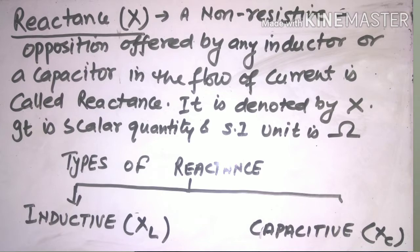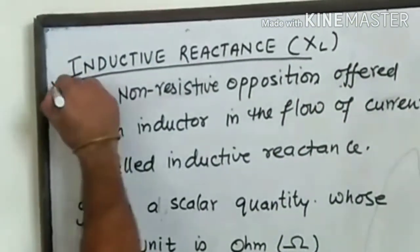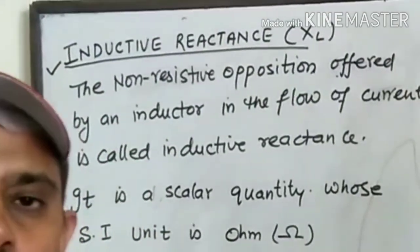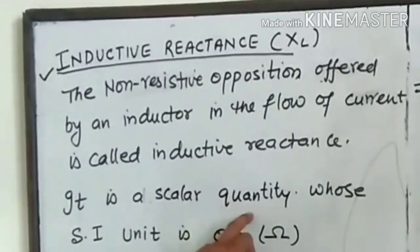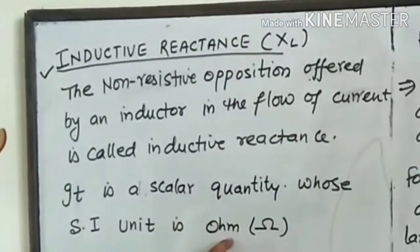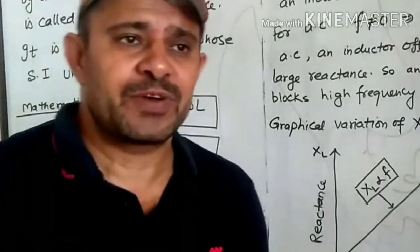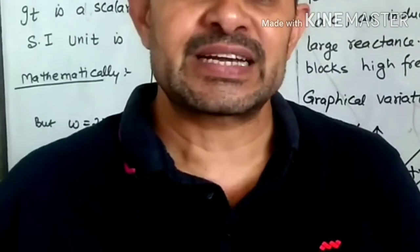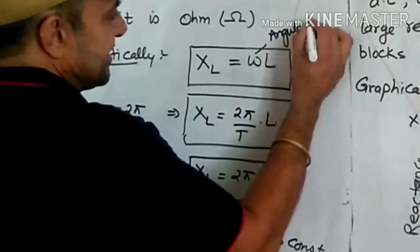Reactance is of two types. The first type is inductive reactance, denoted by X subscript L, and the second is capacitive reactance, denoted by X subscript C. Inductive reactance is the non-resistive opposition offered by an inductor in the flow of current. It is a scalar quantity and its SI unit is ohm. Mathematically, inductive reactance XL equals omega times L, where omega is the angular frequency and L is self-inductance.